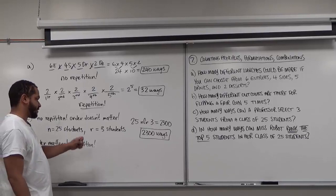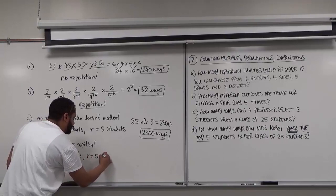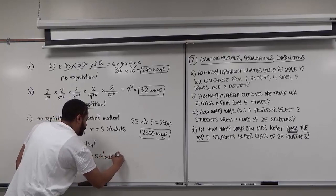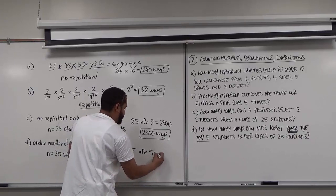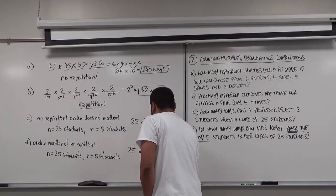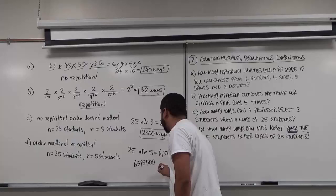Our N is 25 students and our R is 5 selections. The formula: push 25 on your calculator, then the NPR button, then 5, and press enter. We're going to get a really big number: 6,375,500 different ways. This is our solution and the number of ways that the professor can rank the top 5 students.